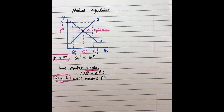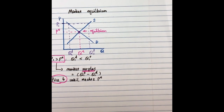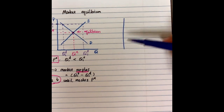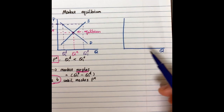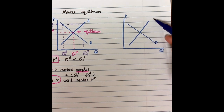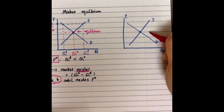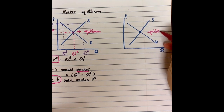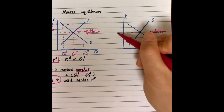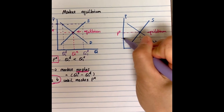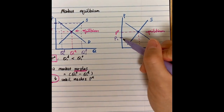So when the market price is higher than the equilibrium price, it results in a surplus and the price will decrease until it reaches market equilibrium. Now let's look at the second case. I'll draw a new graph — quantity on the horizontal axis, price on the vertical axis. The demand curve is downward sloping and the supply curve is upward sloping; they intersect at the equilibrium point. Now suppose the market price is lower — let's say P2.